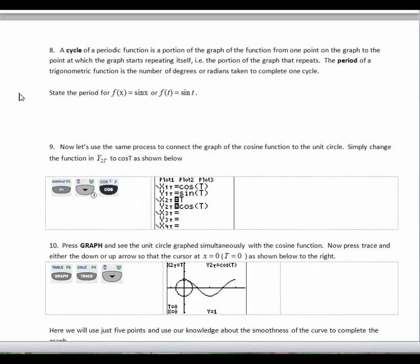So we talked about the fact this is a periodic function. And a cycle of a periodic function is a portion of the graph of the function from one point on the graph to a point at which the graph starts repeating itself. So basically, the cycle is the portion that repeats. And the period is the number of degrees or radians taken to complete one cycle. The period for sine is 2π, right? 2π gave us one rotation, and then the graph started repeating itself.